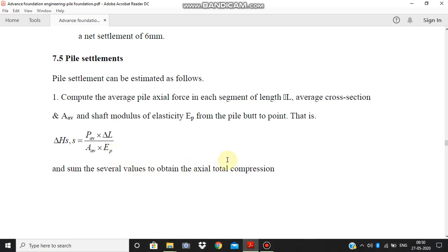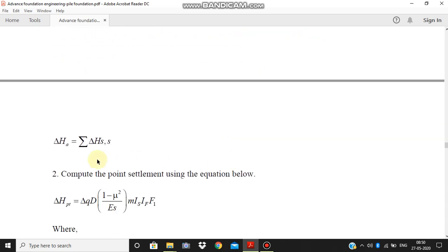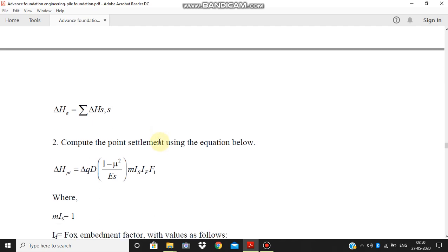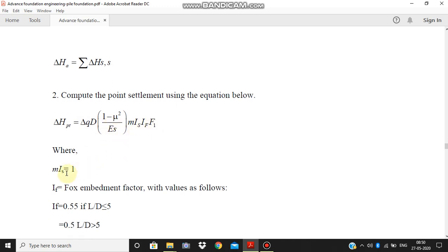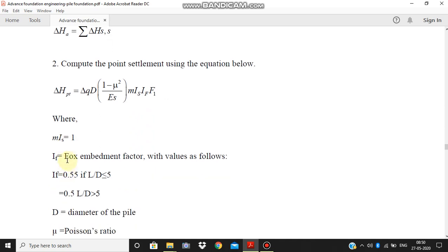And sum the several values to obtain the axial total compression, which is given as delta H_a equal to summation of delta H_s. Then we have to compute the point settlement using this given equation: delta H_pt equal to delta Q into D times (1 minus mu squared) upon E_s times I_s times I_f times F_1, where m is equal to 1.